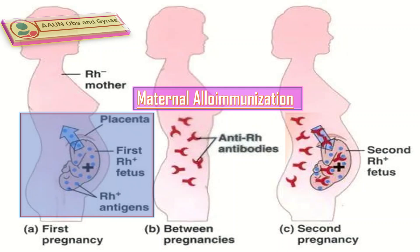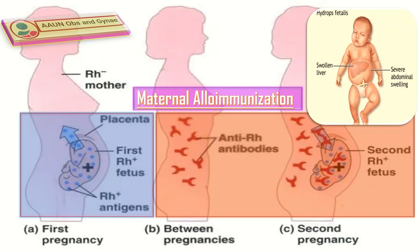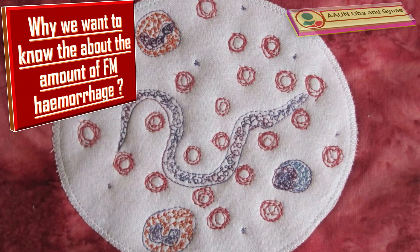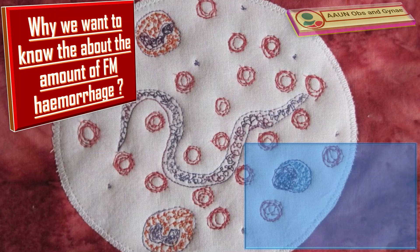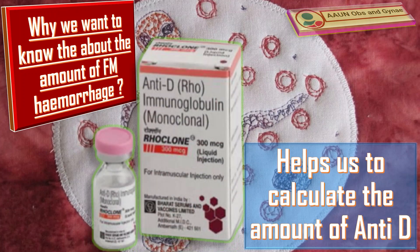During subsequent pregnancies with an RH positive fetus, maternal antibodies can attack the fetal blood, leading to hemolytic disease of the newborn and hydrops fetalis. It is important to know the amount of fetomaternal hemorrhage because the amount assessed by the Kleihauer-Betke test helps us calculate the amount of anti-D immunoglobulin to be given to the patient.